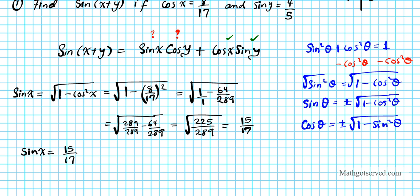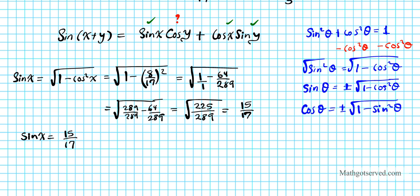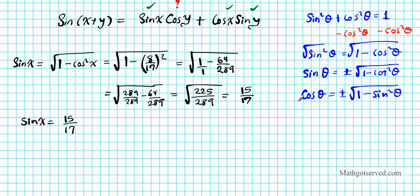I have three ingredients down. I need one more to go. Now we know what sin x is, so I can put a check mark there. Sin x is good. So the last thing we need is cos y. I can use sin y which is 4/5 to determine what cos y is. So we're going to be using this formula right here, this cosine variation of the Pythagorean identity.